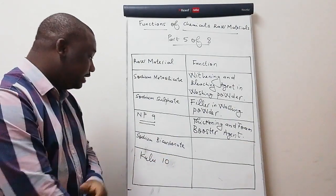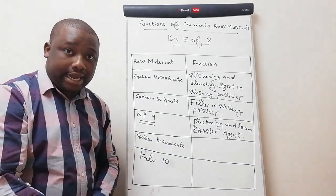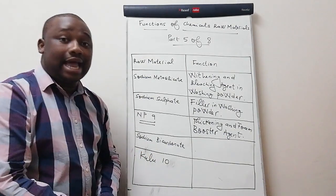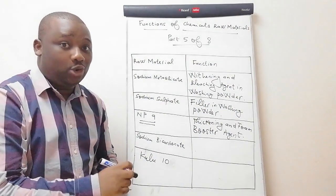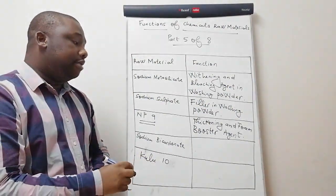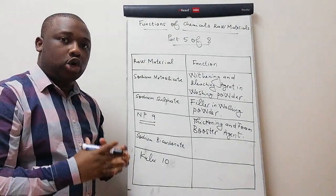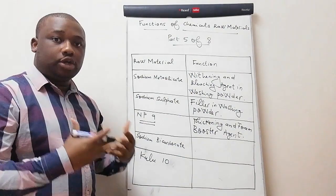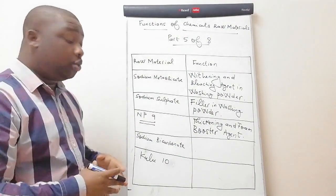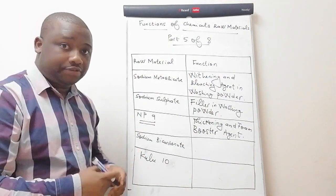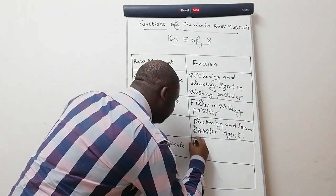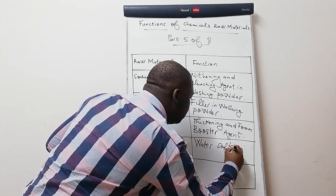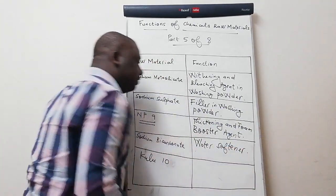The next ingredient, as you can see, is sodium bicarbonate. Sodium bicarbonate is another ingredient that can also do a lot. But in the manufacturing of household products, it's most used to soften water. So we're going to say water softener.